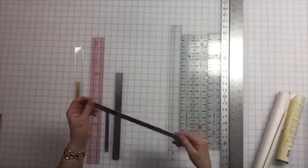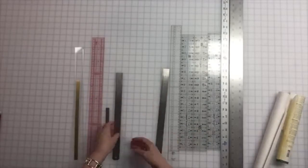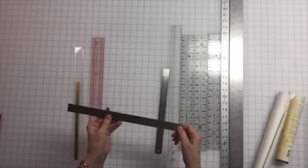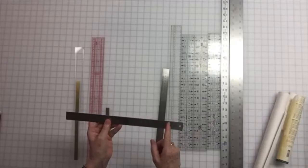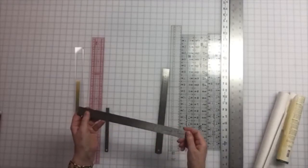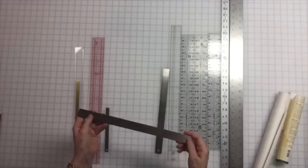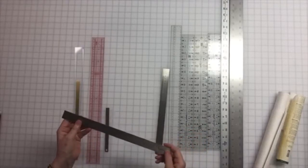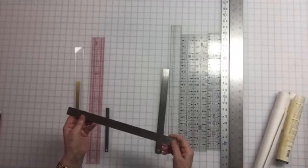This one's slightly different. This is by Pacific Arc, and it's a 30 centimeter on one side and 12 inches on the other. So this is a very versatile ruler if you're flipping back and forth, which is really what I do, flipping back and forth between metric and imperial.